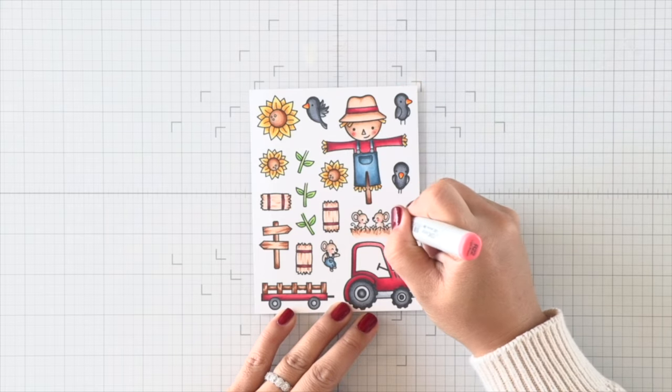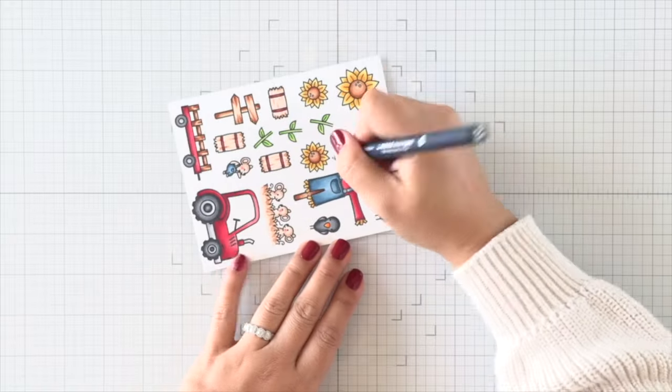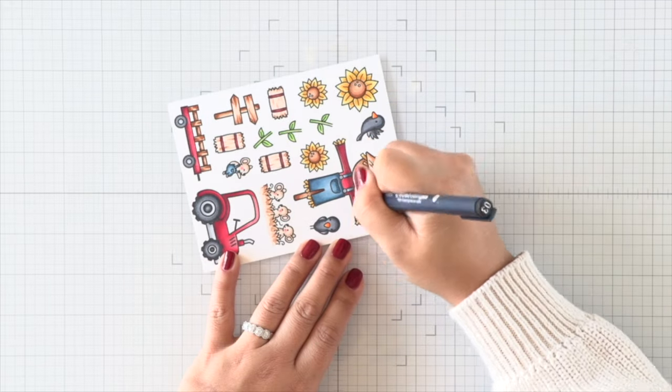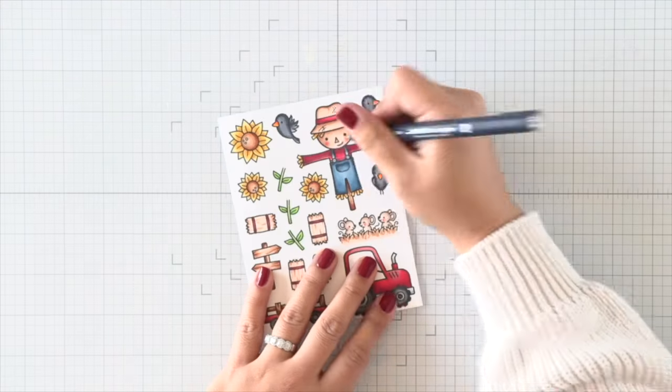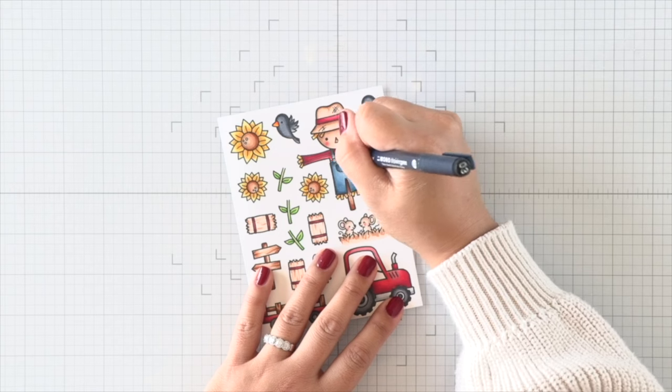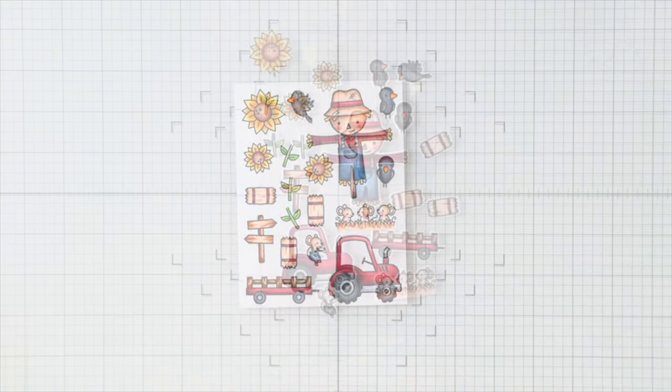To add some texture, I'm going to use a Monoline pen. You can just use any black pen for this, but I decided to draw some hatch marks on the scarecrow's hat and then also add some plaid lines to his red shirt. This just gives that shirt a bit more texture and interest.